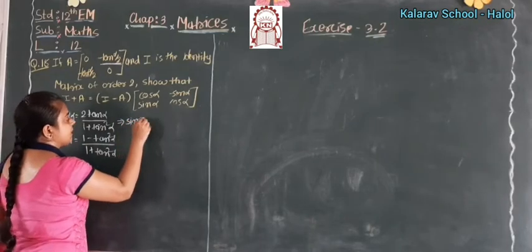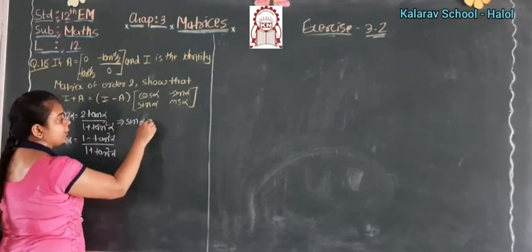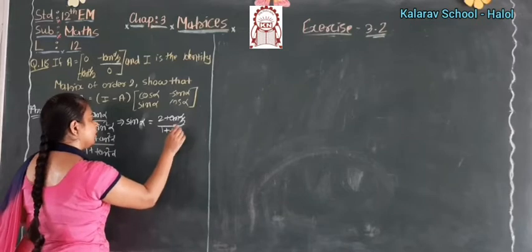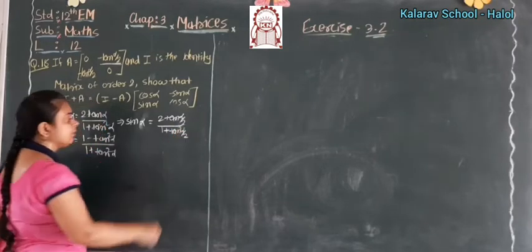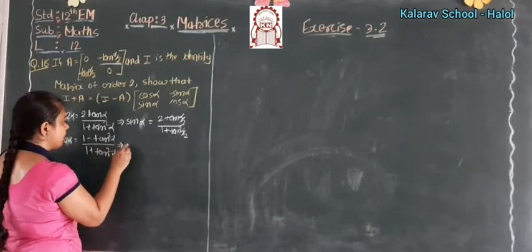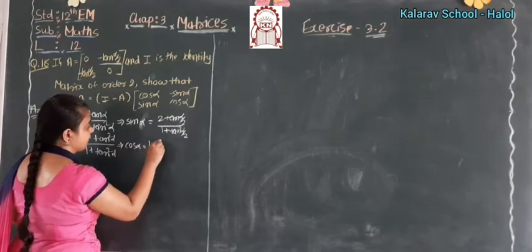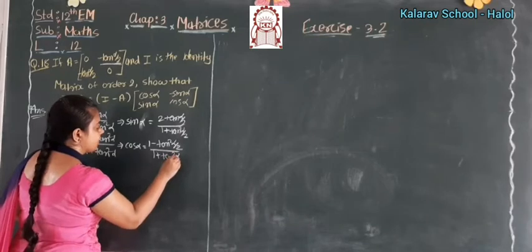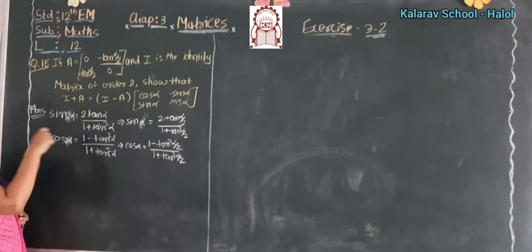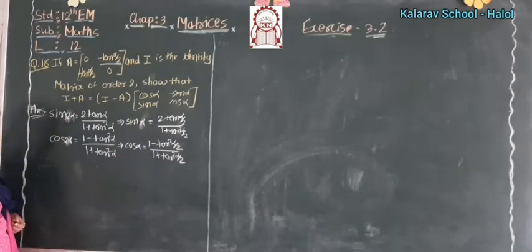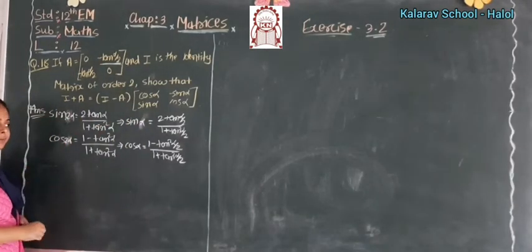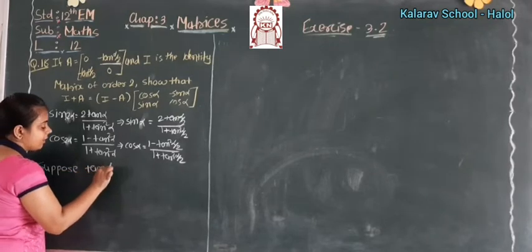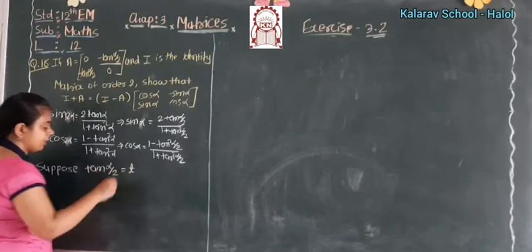So sin α equals 2·tan(α/2) upon 1 plus tan²(α/2), and similarly cos α equals 1 minus tan²(α/2) upon 1 plus tan²(α/2). To simplify our calculation, we suppose that tan(α/2) is equal to t.